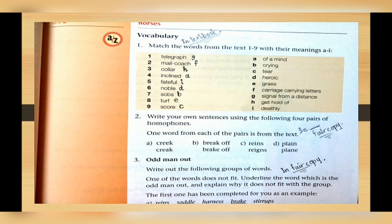For example, A is creek/creek - these both words sound similar but the meanings are different and their spellings are also different. B is break off and brake off - these are two different words. C is rains and reins - these words have different spellings but sounds are same. D is plain and plane. Inshallah we will do this in fair copy.